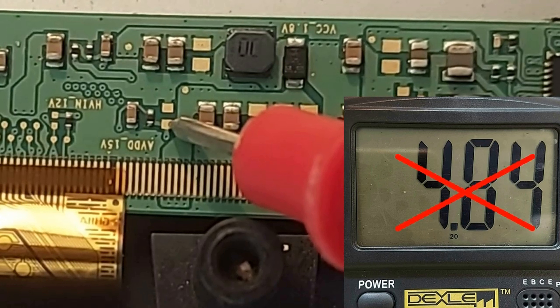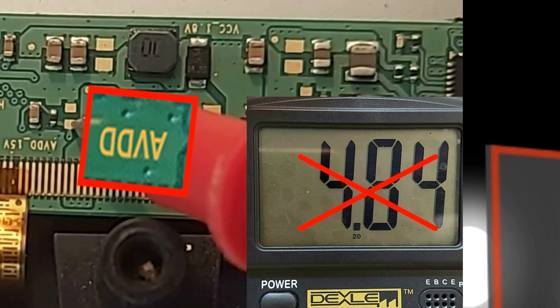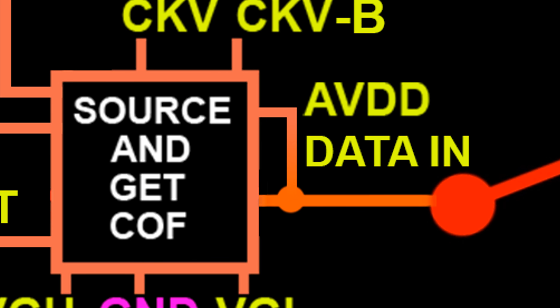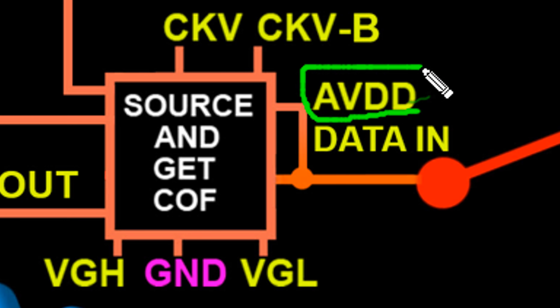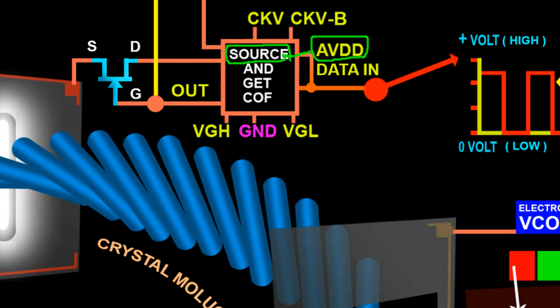To understand why these voltages are missing, we need to go inside the LCD screen. Let's see where AVDD goes. AVDD comes into the AVDD input section of the source IC. Now we try to understand what works with the AVDD supply in the LCD screen.